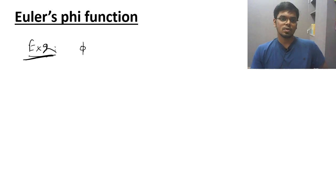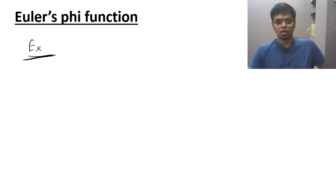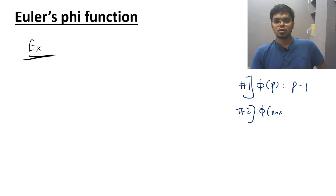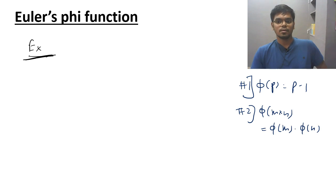Let me write the two properties again. Property number 1: phi of p equals p minus 1. Property number 2: phi of m times n equals phi of m times phi of n.